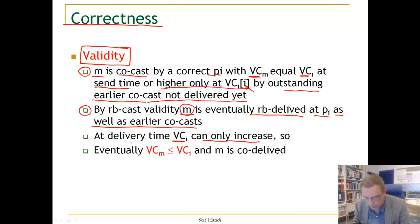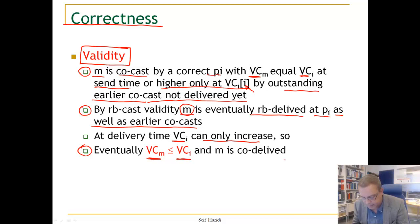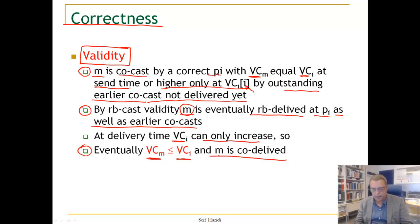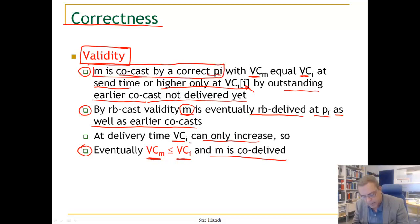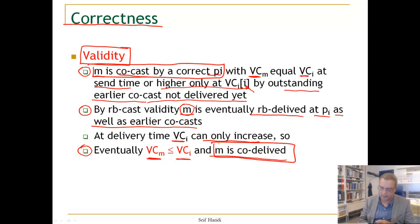So eventually we get to a situation where VCM, the vector clock associated with the message, will be less than or equal to the local vector clock. And in this case, the message will be delivered. So again, if M is causally broadcast by a correct process, then M will be eventually causally delivered. And that is validity.